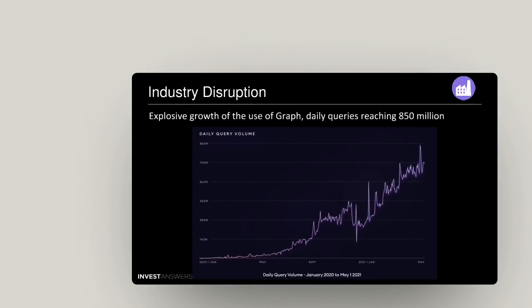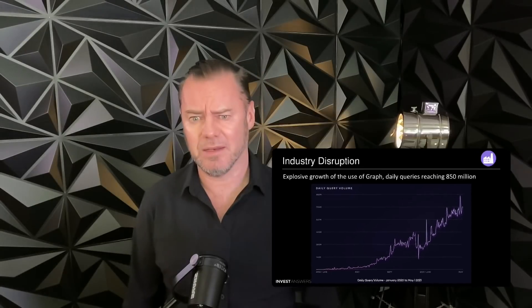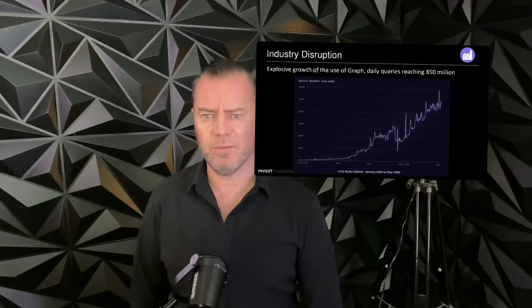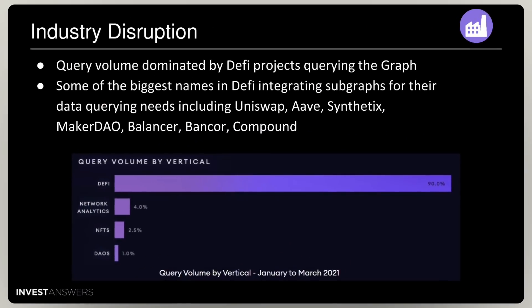Industry disruption — this is kind of spectacular. If you look at the explosive growth and use of The Graph, they now have daily queries of over 850 million, which is very impressive. In that industry disruption, decentralized finance projects are dominating the query volume, and this affirms things like some of the names I'm in — like Aave and Uniswap — which have been doing a lot with this platform.